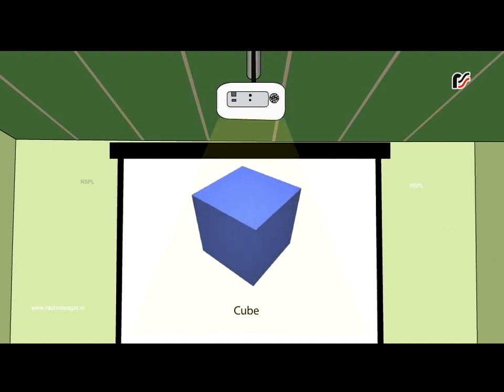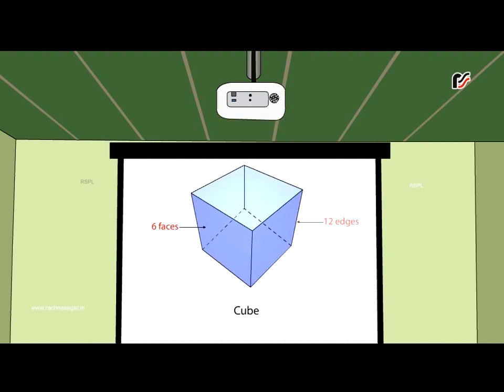This is a cube. It has six faces, twelve edges and eight corners. All the faces of a cube are in the shape of a square.